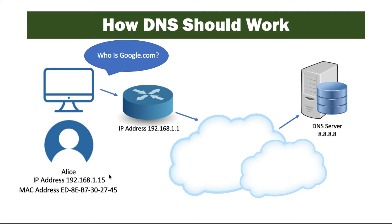The way a DNS resolution should normally work is Alice will query for a website like Google.com. It'll check the local computer to see if that name has been resolved. If it doesn't find a resolution there, it will go to the router, which is normally in a small office or a home office, an access point that also has the DNS server, and it'll ask that DNS server who is Google.com. If that DNS server doesn't know who Google.com is, it'll be forwarded to a top-level domain DNS server, something like .com. That DNS server will redirect the traffic to a DNS server that knows who Google.com is. In this case, we see DNS server 8.8.8.8, which is one of Google's DNS servers.